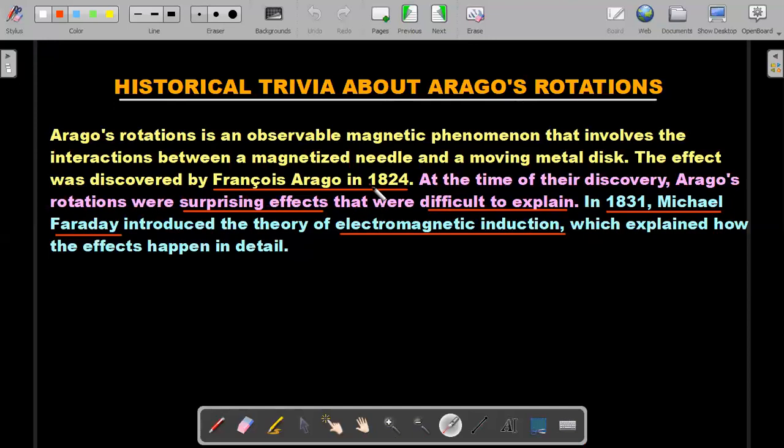So just a historical trivia about the importance of this experiment is that this was found or a similar type of actually, there were a series of Arago's rotation experiments, which this one is one of the easiest ones that JE has picked up. So it was discovered by Arago. He could not explain why it is happening. And at the time of the discovery, they were very surprising and people thought it was very intriguing. So but seven years later, when Michael Faraday introduced the theory of EMI, then this particular effect got explained. So it's a very nice way that IIT has taken up a simplistic old experiment to test your understanding in EMI.